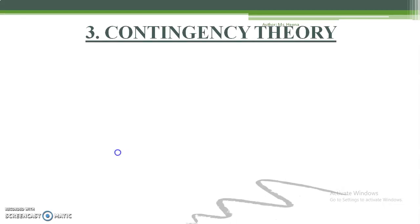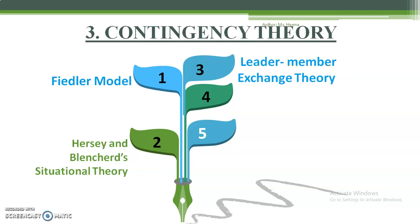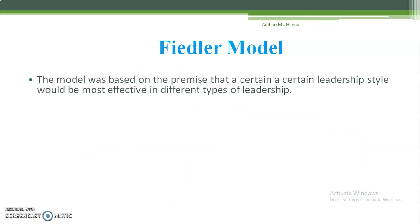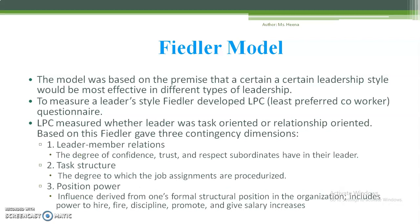Contingency theory explains the Fiedler Model. This model was based on the premise that a certain leadership style would be most effective in different types of situations. To measure a leader's style, Fiedler developed the Least Preferred Co-worker questionnaire, called LPC, which measured whether a leader was task-oriented or relationship-oriented.